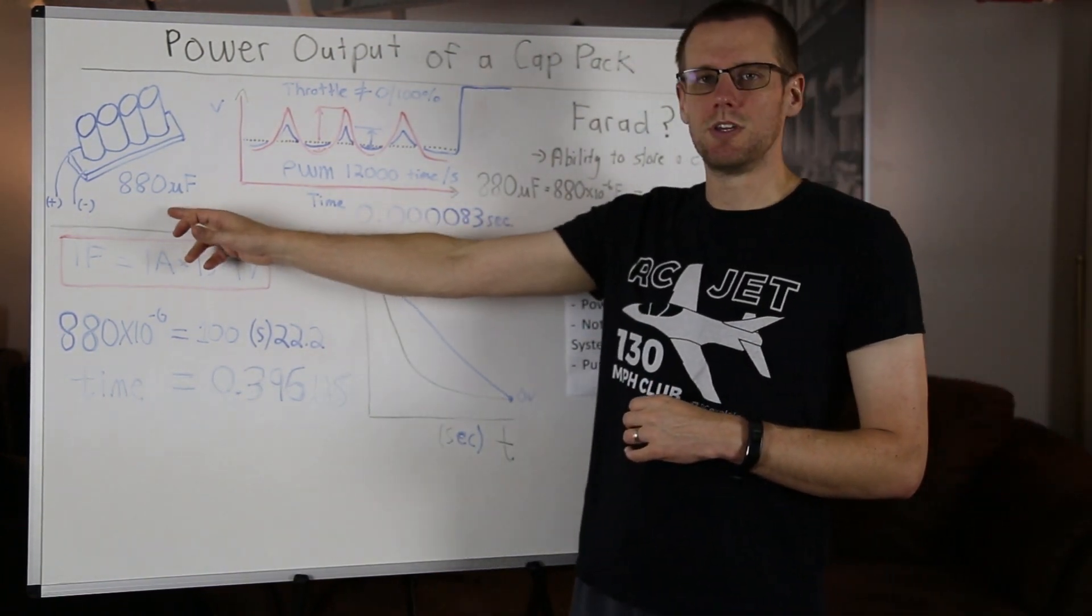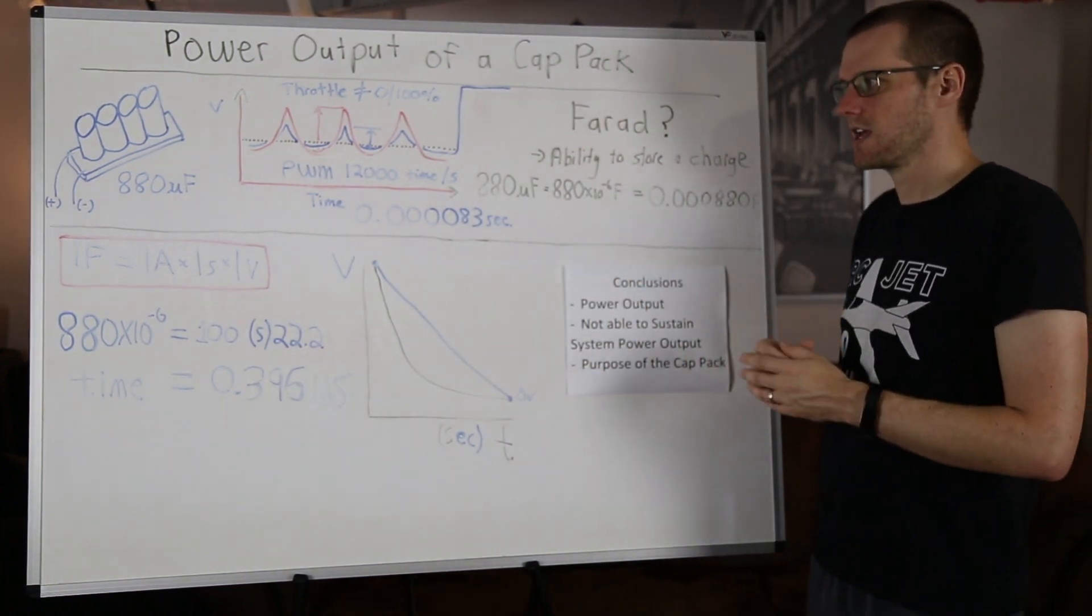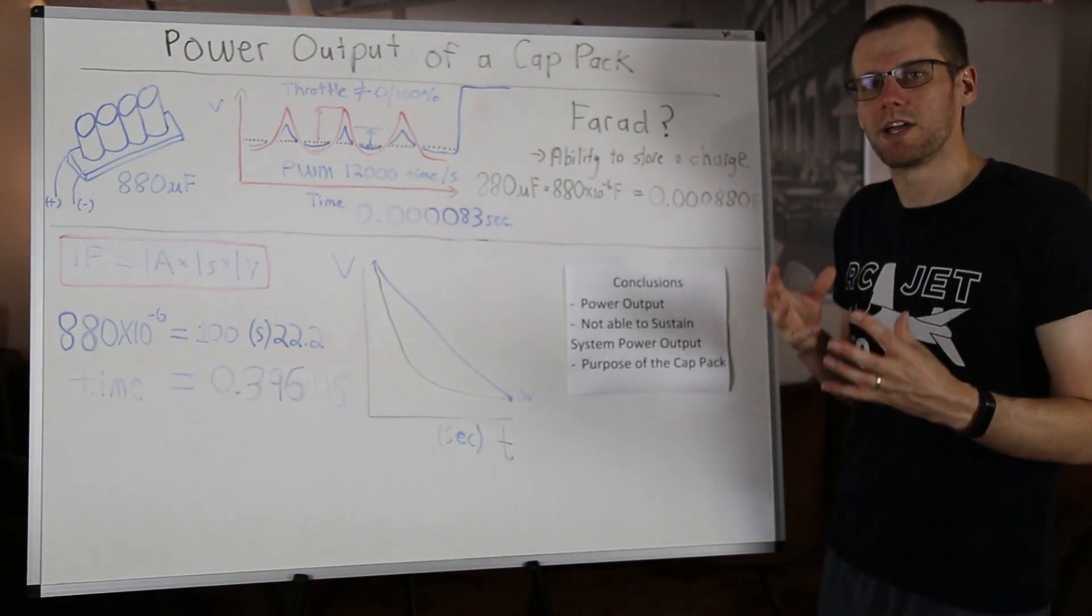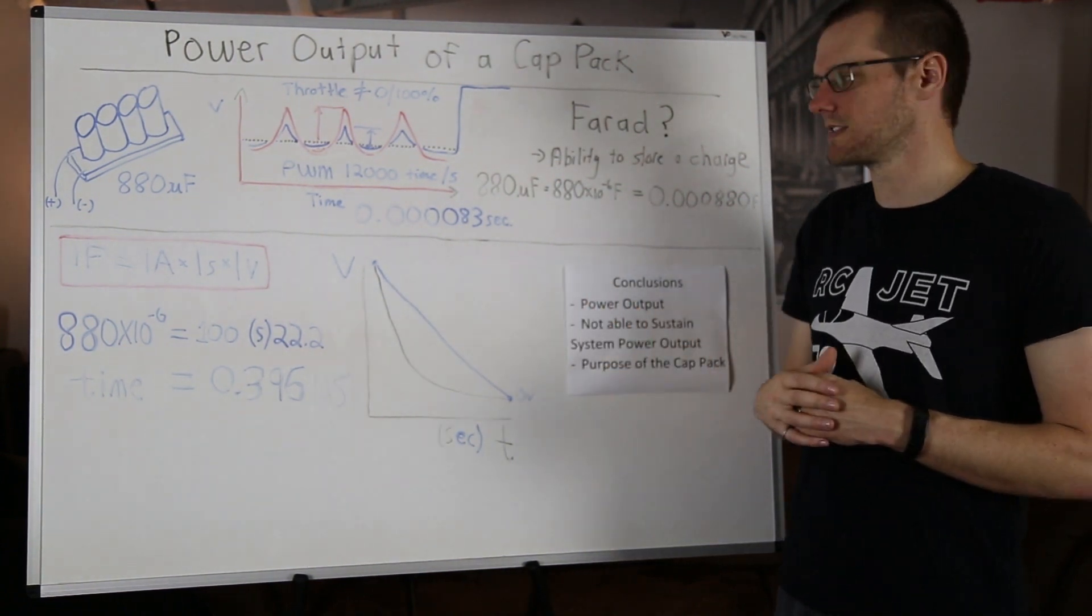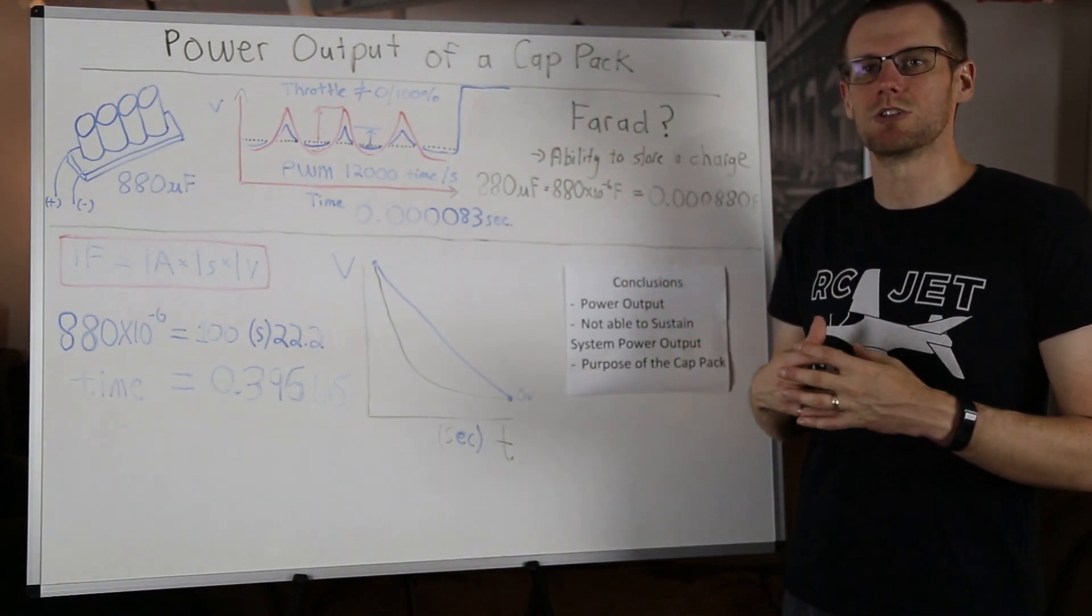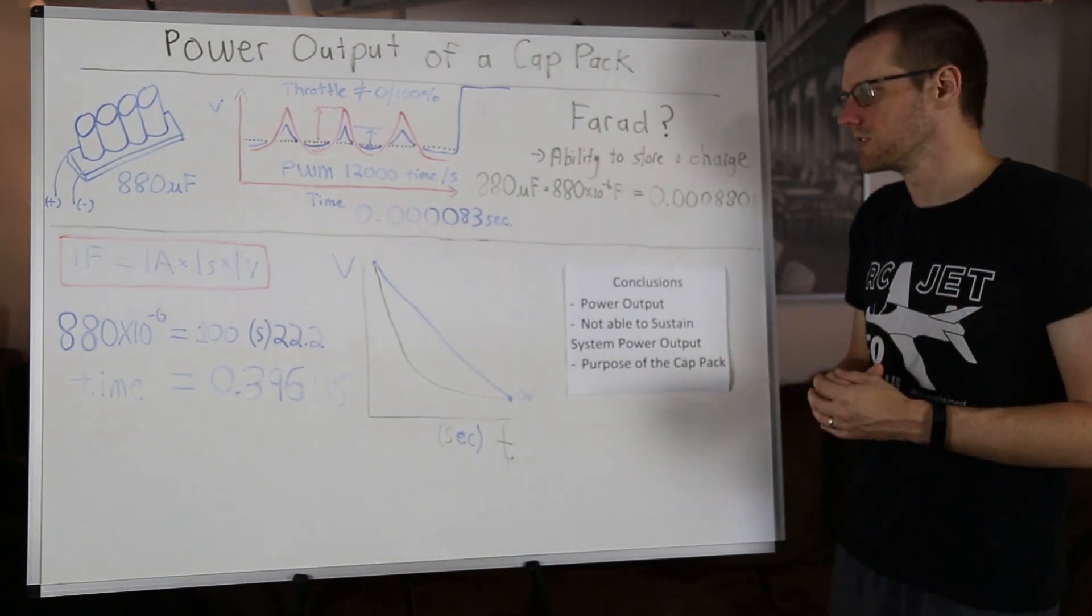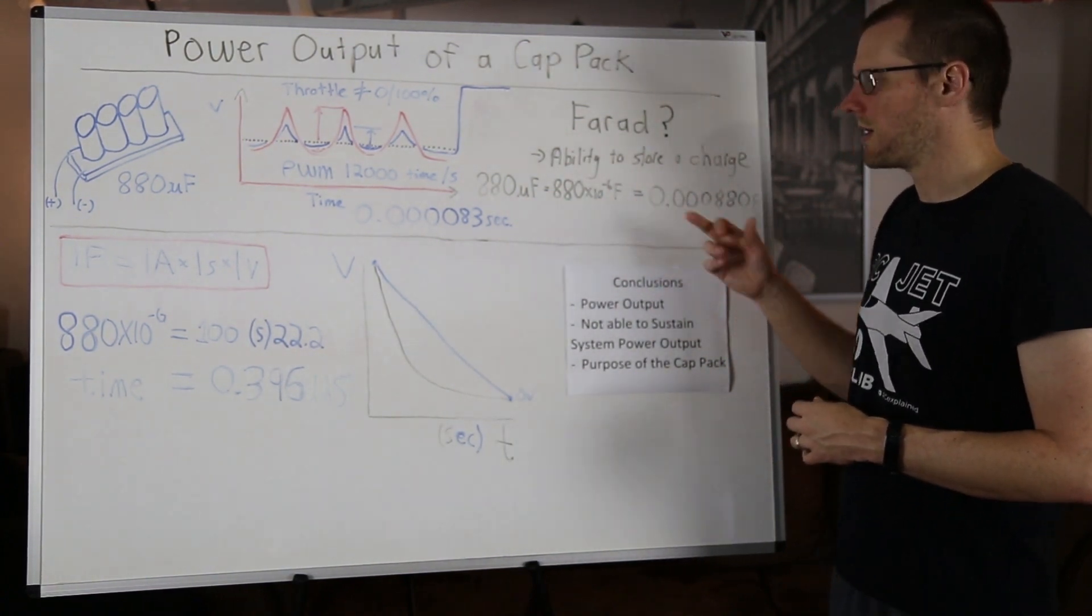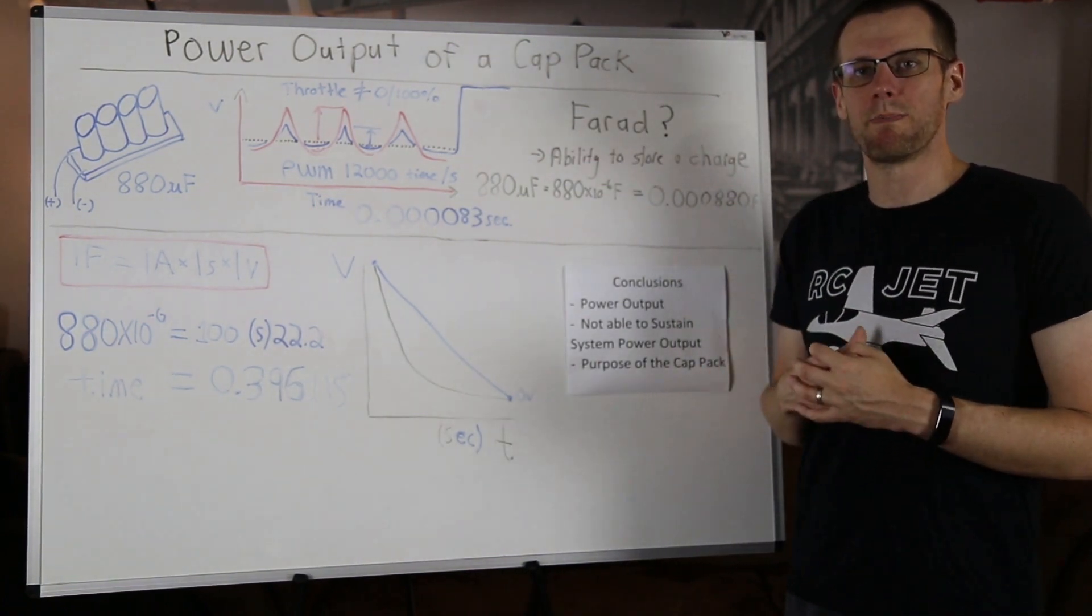Now, when we get to this value here, which is a value taken right from a radio-controlled application, I believe it's the Castle Creations bank that they offer, we have 880 microfarads. Well, micro is a very small number. Micro is actually times 10 to the negative 6. If we want to actually see this value represented in the base unit, which is just farads, we're going to get 880 times 10 to the negative 6 farads. We simply multiply that value by times 10 to the negative 6, and what we get is a value represented here in decimal form. So it's a very, very small unit of capacitance.